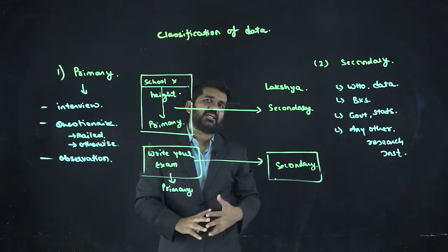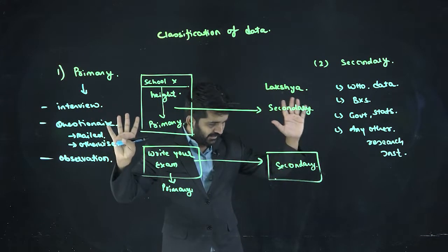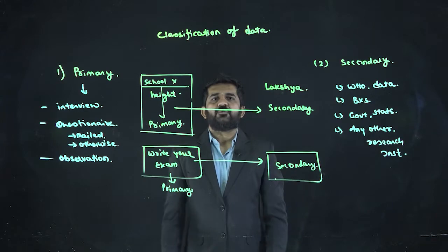So data can be classified into two types: primary data and secondary data. Thank you, friends.